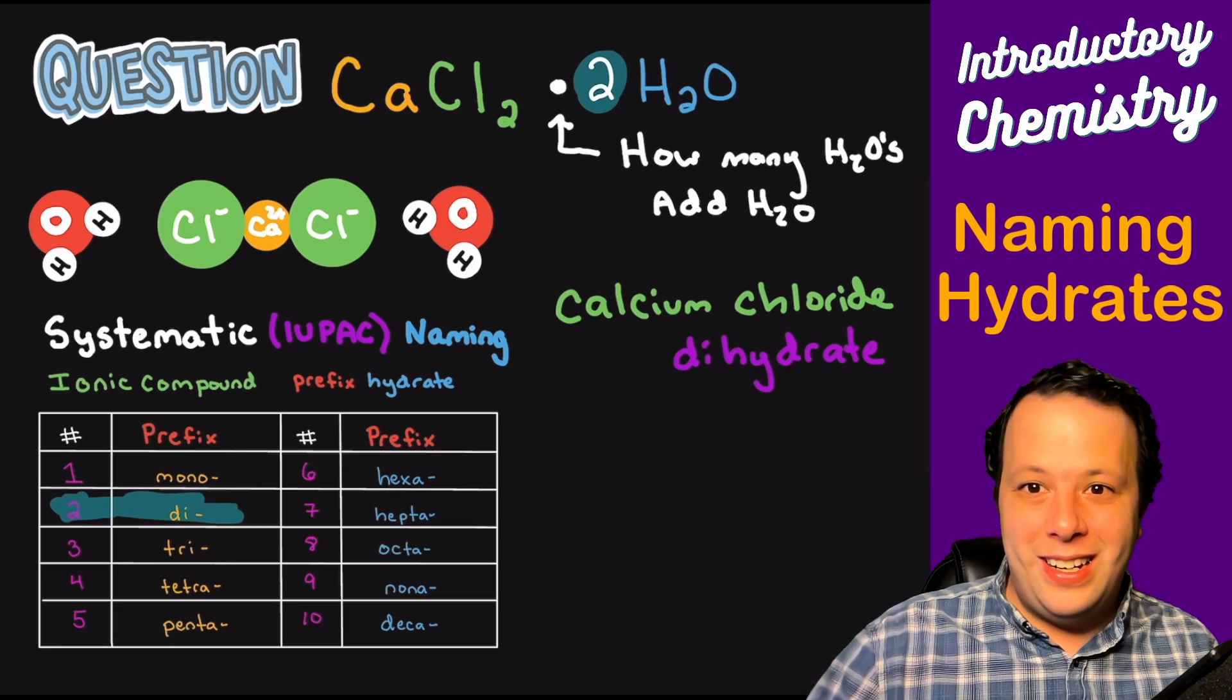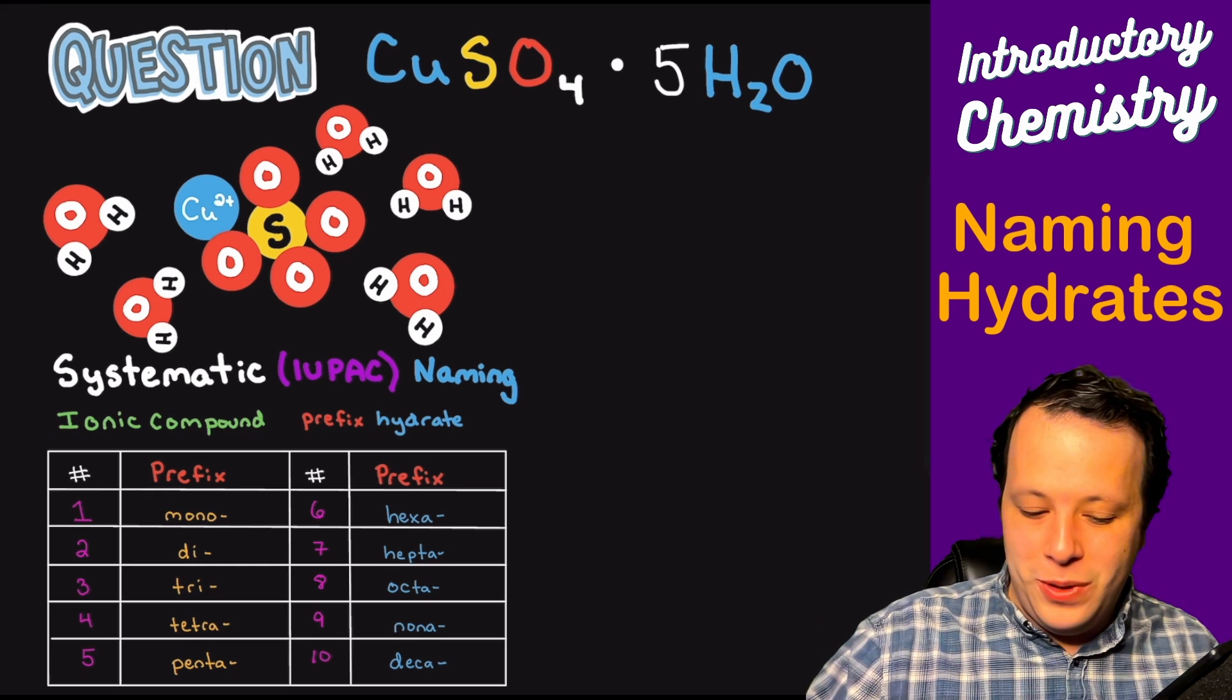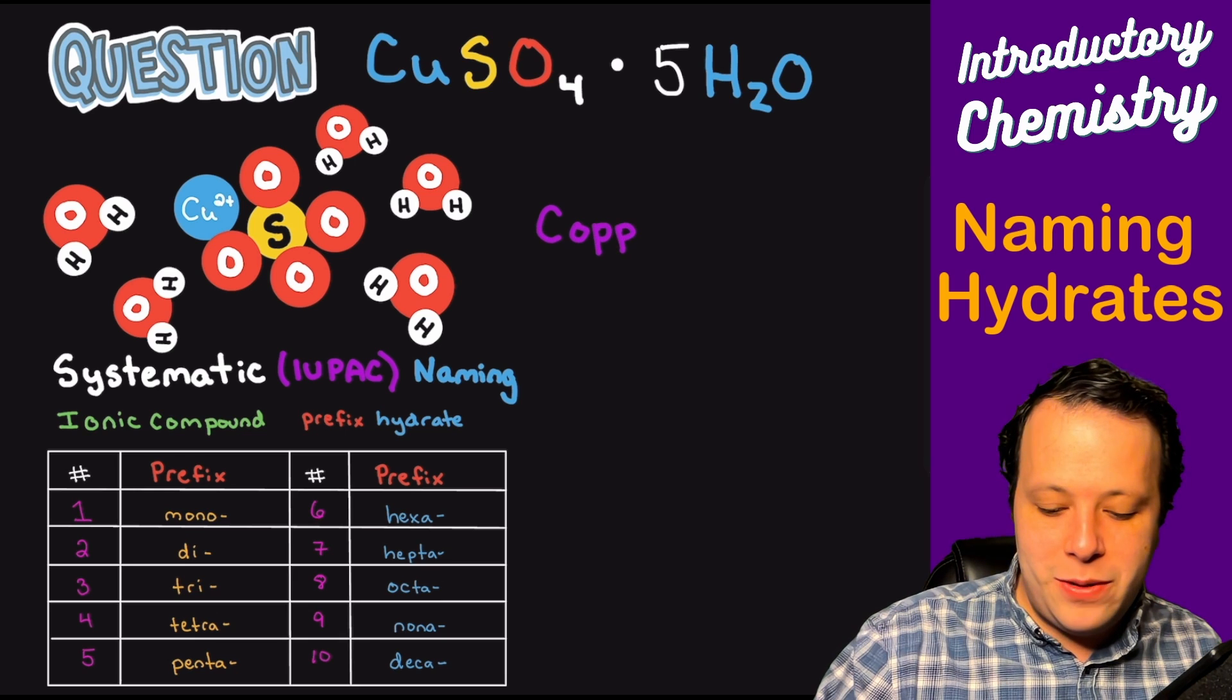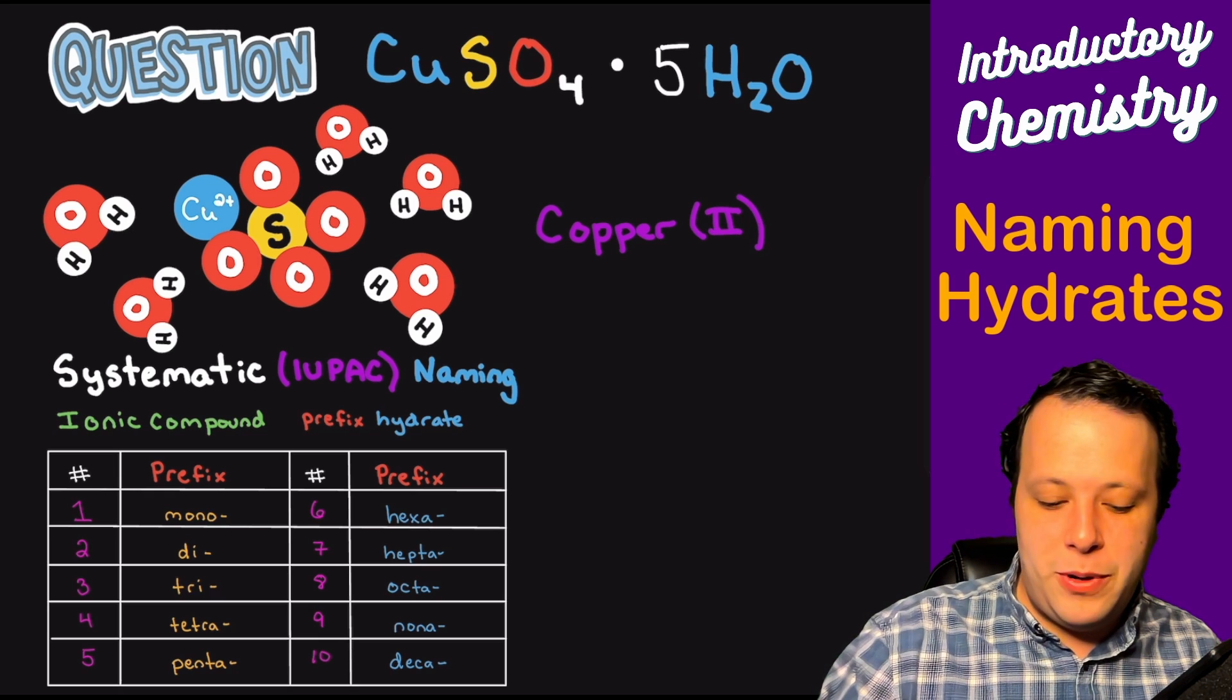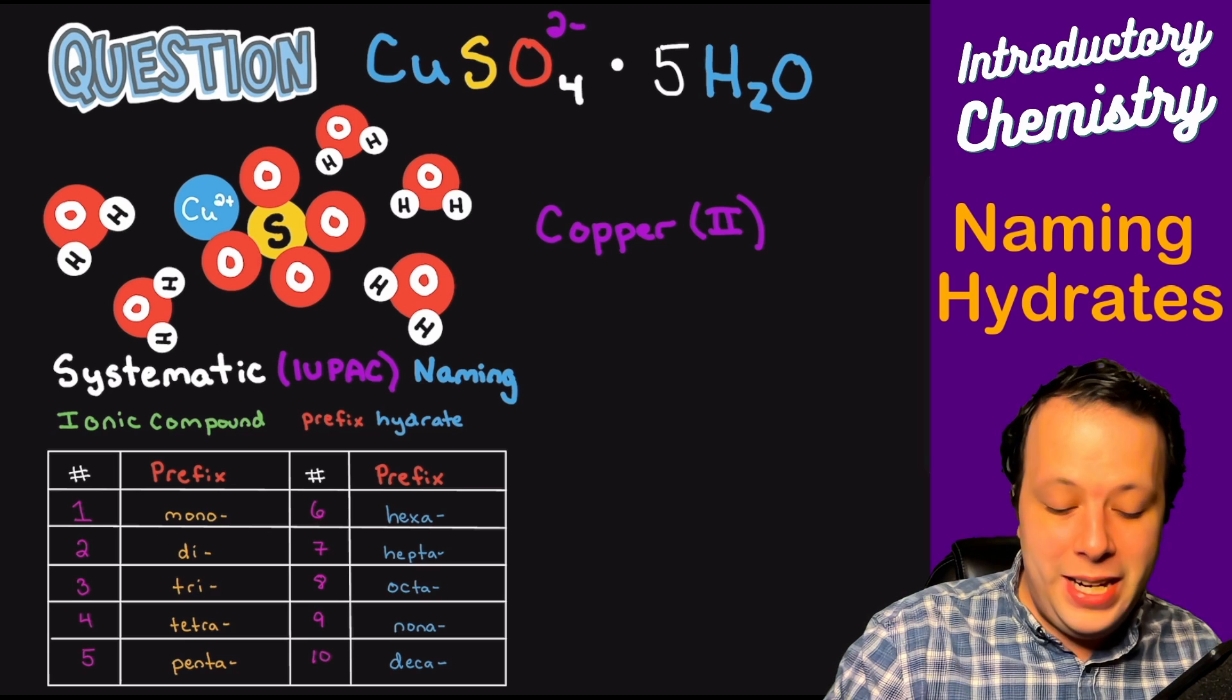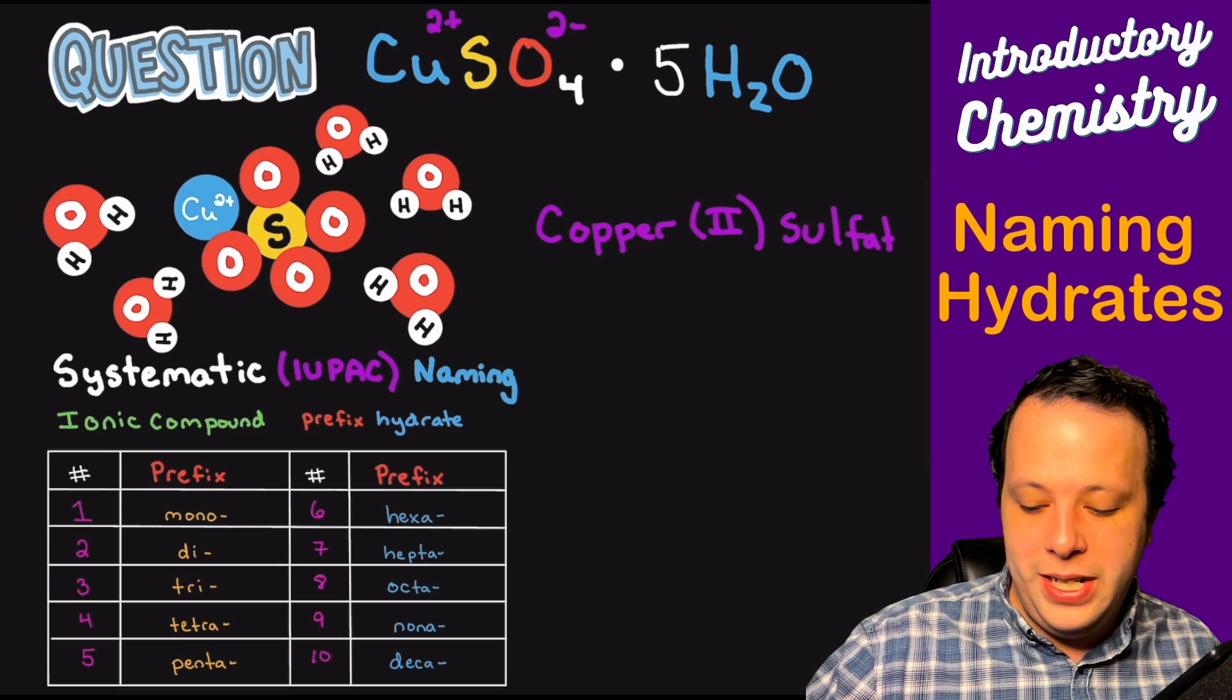Let's take a look at another example. So I have CuSO4 with five waters attached to it. So once again, we're going to go through our naming here. So we have copper as our molecule. And being that this is a transition metal, we have to include what the charge is, that's copper two. The way that I got that was being that sulfate has a two minus charge, making copper have a two plus. So we'll have copper sulfate.